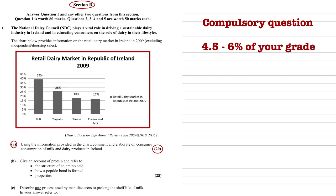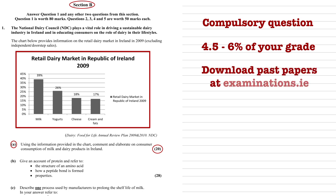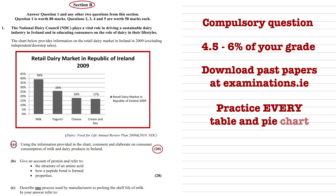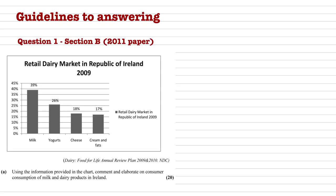Unfortunately, there is no specific chapter in home economics textbooks which covers this type of question, so the best way to prepare is to go back over past exam papers and practice every table and pie chart from 2004 to 2013 inclusive. There are a few general guidelines which need to be adhered to when answering these types of questions. The following sample answer covers some of the key points required.